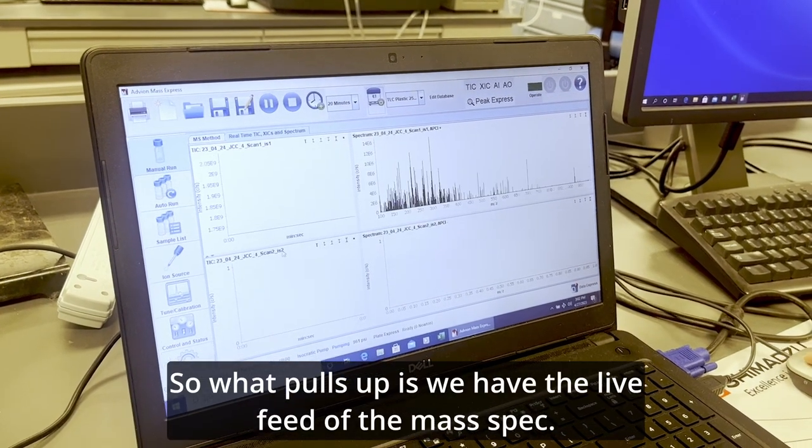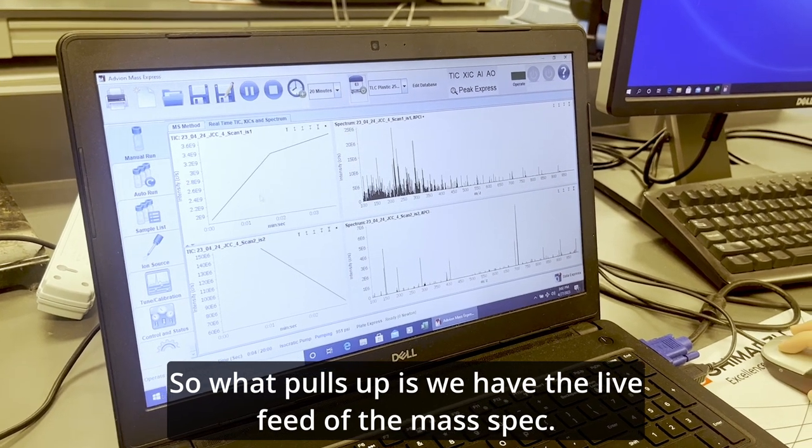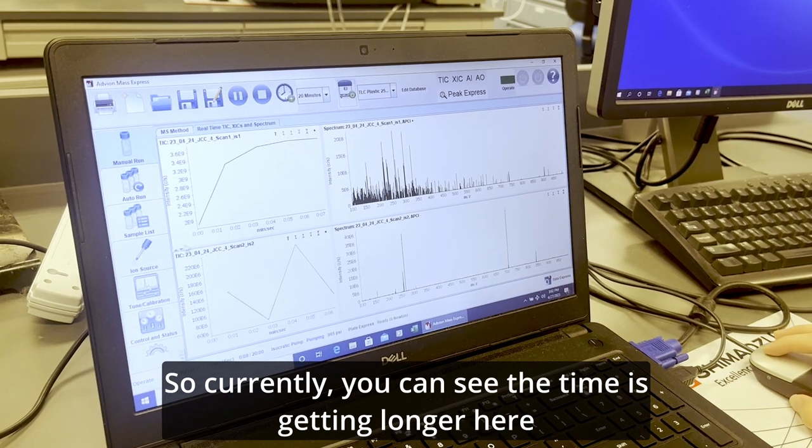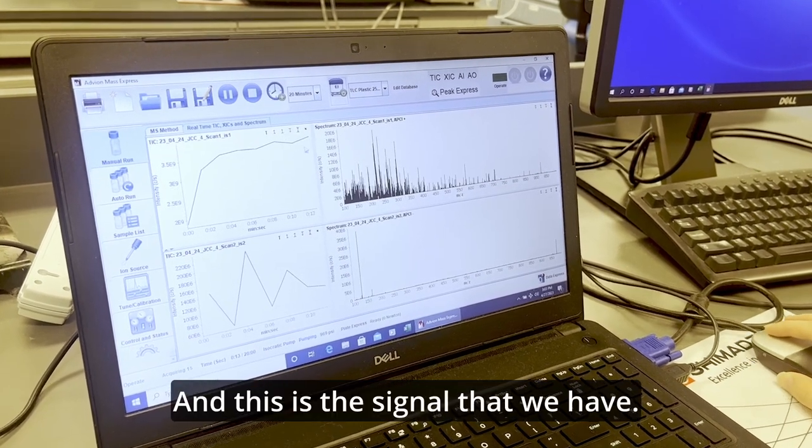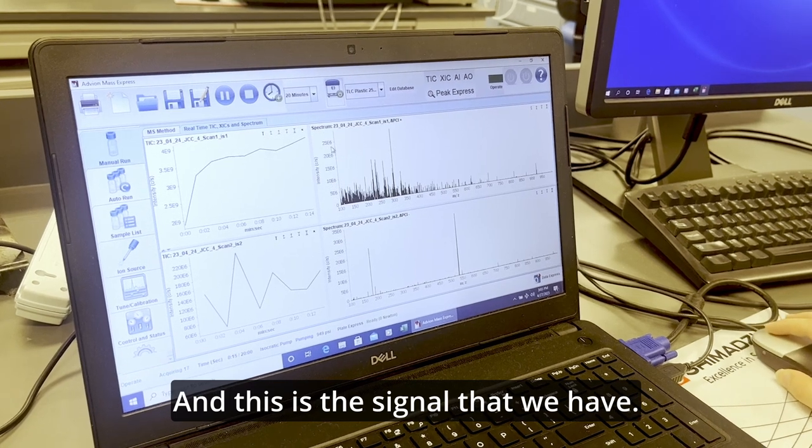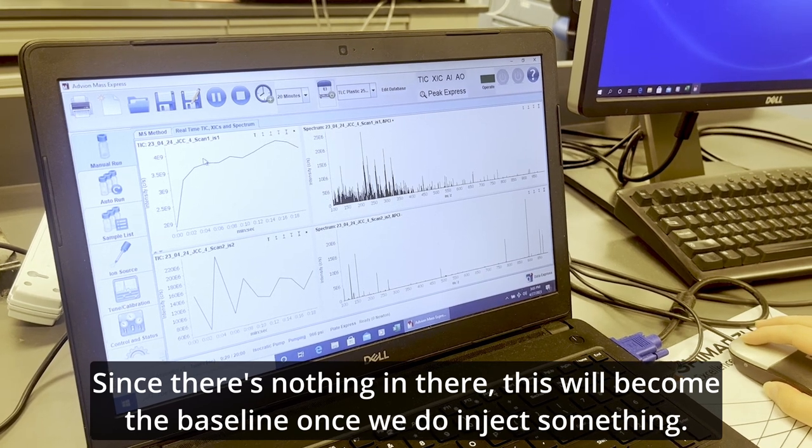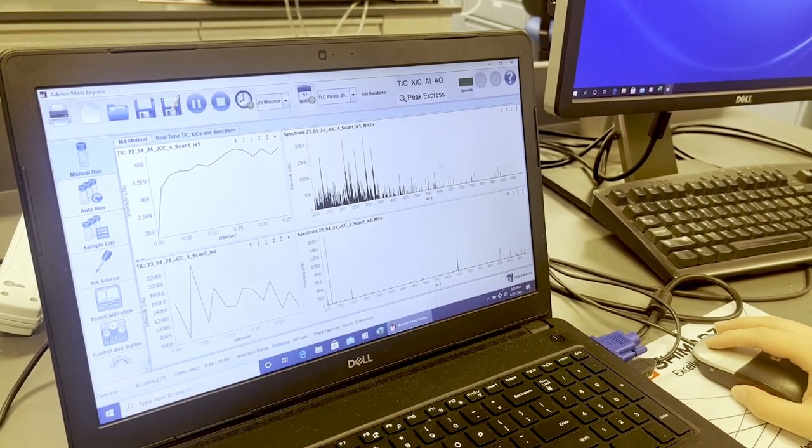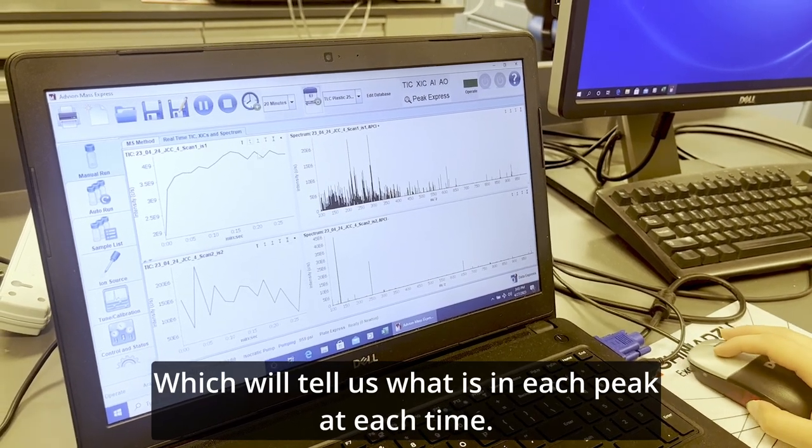So what pulls up is we have the live feed of the mass spec. So currently, you can see the time is getting longer here, and this is the signal that we have. Since there's nothing in there, this will become the baseline once we do inject something. And then over here is our mass spectrometer data, which will tell us what is in each peak at each time.